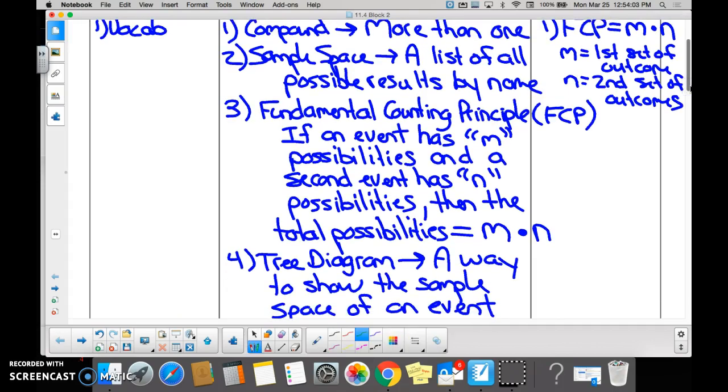A sample space lists everything that is possible by name. When you go to a restaurant you sit down, every possible thing that you can order is on the menu. It's the sample space. It lists them all by name.